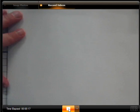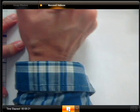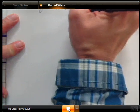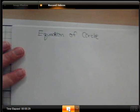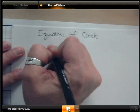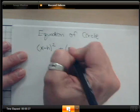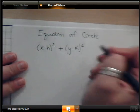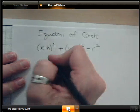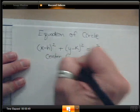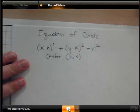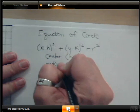Today we're going to learn how to graph a circle and learn about the equation of a circle. You'll need some grid paper because we're going to be graphing circles. This is a topic you'll also find in Algebra 2. The equation of a circle is: x minus h squared plus y minus k squared equals r squared. The center of a circle is h comma k, and the radius is r.